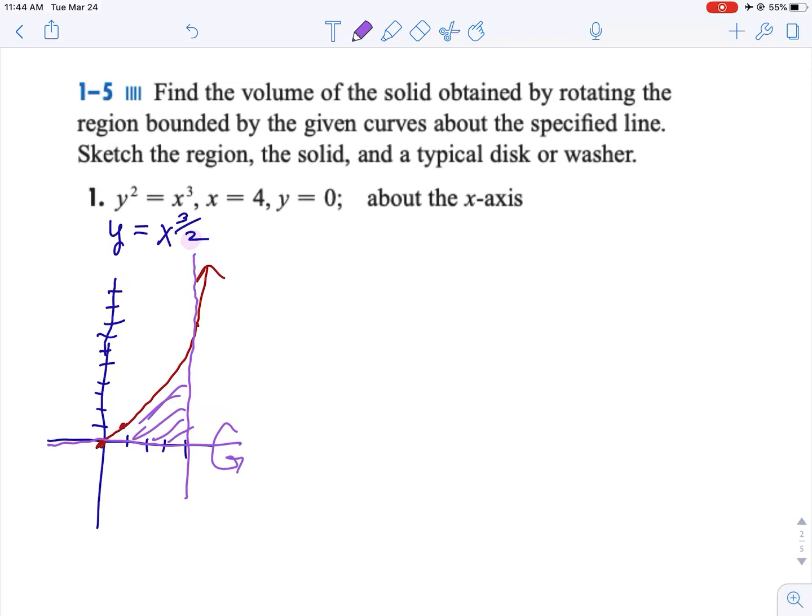So we are going to go from 0 to 4, pi times x to the 3 halves is our curve squared, which is 0 to 4 of pi x cubed dx, which is from 0 to 4. Now we can just do the general antiderivative.